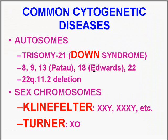An additional chromosome of autosome 18 is called Edwards syndrome. You could also have chromosome 22 abnormalities. We're going to talk about a disease called 22q, which involves a band and subband deletion — a very interesting disease as well.